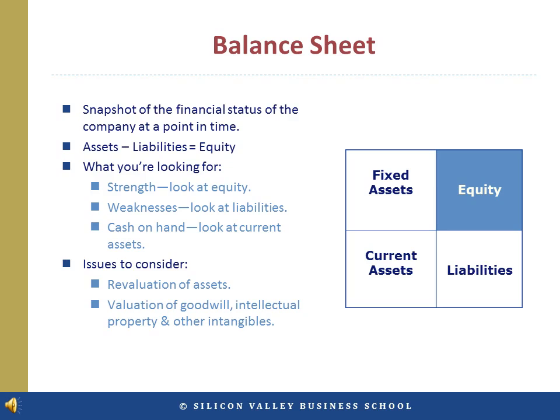Many people view the balance sheet as a 2x2 matrix. On the left there are the fixed assets and the current assets; on the right are the liabilities and equity. An asset like cash on hand is a current asset, but an asset such as ownership of real estate property is a fixed asset. Whether the asset is fixed or current depends on how readily it can be converted into cash.